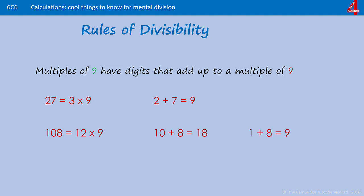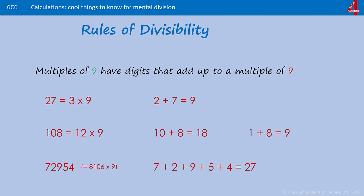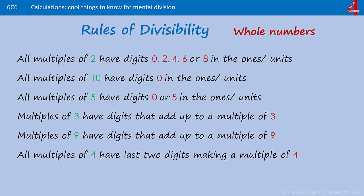Another number you might not recognize as a multiple: 72,954. I can say confidently that that is a multiple of 9 because 7 + 2 + 9 + 5 + 4 = 27, and 27 is a multiple of 9. And if you wanted to be doubly sure, add the 2 and 7, and they equal 9.